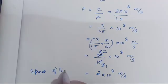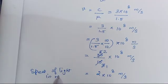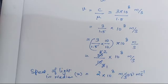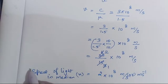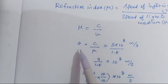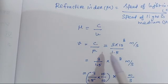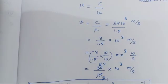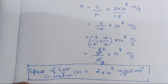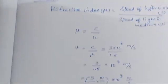Speed of light in medium is equal to 2 into 10 power 8 meter per second, or 2 m/s (ms⁻¹). To summarize: the formula is mu = C / V, rearranged to V = C / mu. Direct substitution gives the final value of 2 into 10 power 8 meter per second. This is a very important problem, children. Thank you.